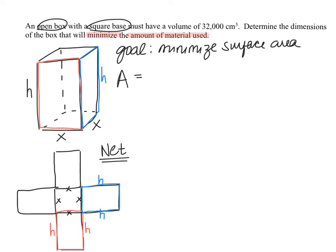We're adding the areas of all five faces — it's an open box so there's no lid. The base is a square with area X squared. Each of the four side rectangles has area X times H — the front, back, right, and left sides are all congruent. So the surface area equation is A = X² + 4XH. This is our surface area equation.